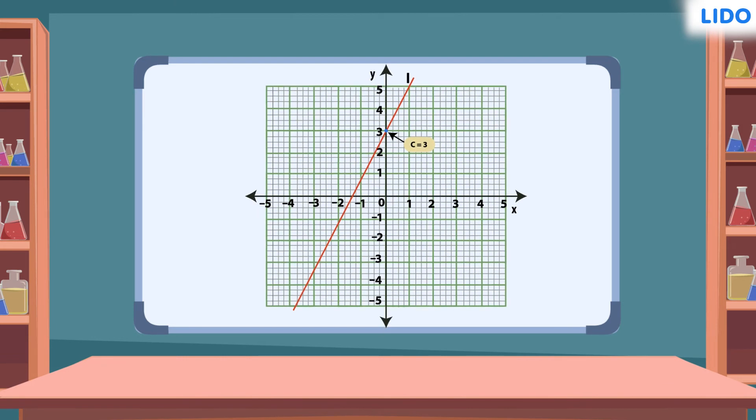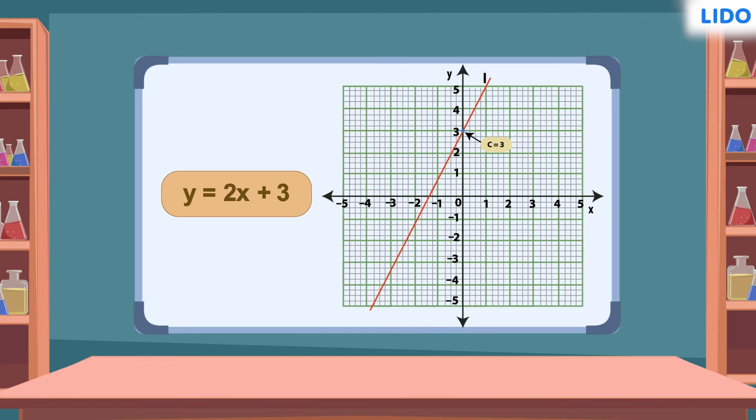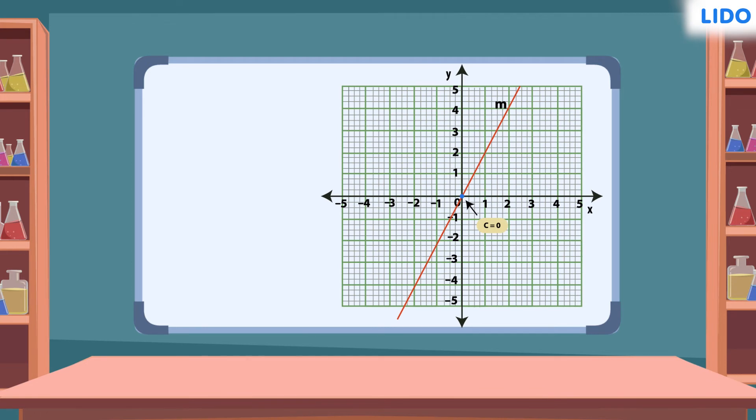Let's take the example of line L. As the line intersects the y-axis at 3, the equation is y equals 2x plus 3. Considering line m, the line intersects exactly at the origin. Its equation is y equals 2x.